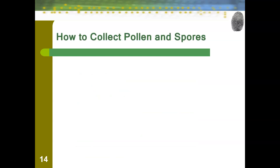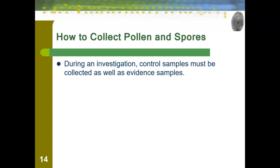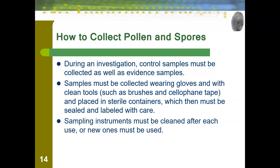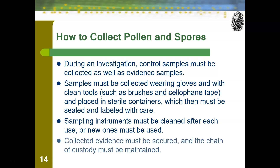When collecting pollen or spore evidence, control samples must be collected alongside evidence samples. A control sample establishes a baseline — the pollen and spores just existing at the crime scene — so we can compare it to whatever we're investigating. Samples must be collected wearing gloves with clean tools such as brushes or cellophane tape and placed in sterile containers, which must be sealed and labeled carefully. Sampling instruments must be cleaned after each use or replaced to avoid cross-contamination, and the chain of custody must be maintained.